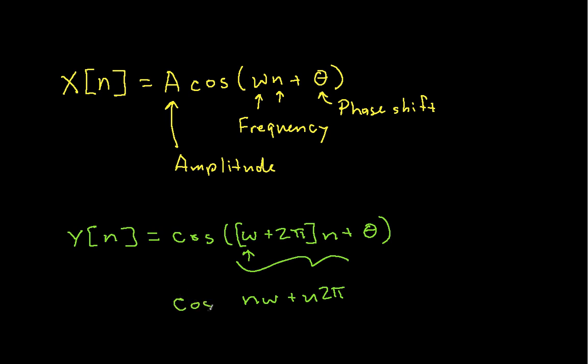This term here can be written as n omega plus n times 2 pi. So we still have cosine with these other terms. But the cosine waveform is periodic with period 2 pi. So I can add integer multiples of 2 pi to its argument and not change its value at all. Which, again, is why you get the situation that we had. As I increase the frequency by a factor of 2 pi, I'm basically back where I started.